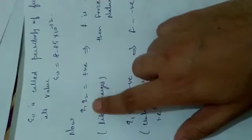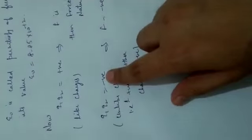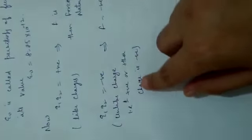Now, we can find: if Q1 Q2 both are like charges, means both are positive or both are negative, we get positive, which implies that force is positive. It means the force is repulsive in nature. If Q1 and Q2 product is negative, that means unlike charges, one positive and the other charge is negative, then it implies that force is negative. It is attractive in nature.